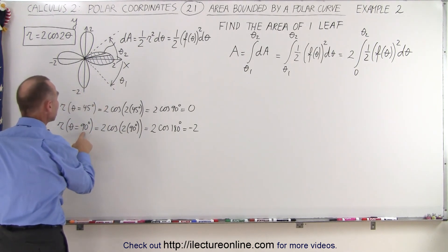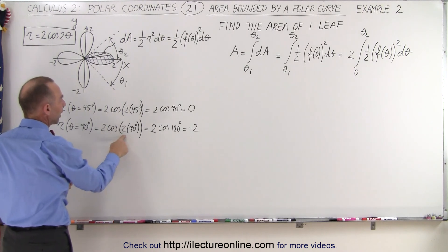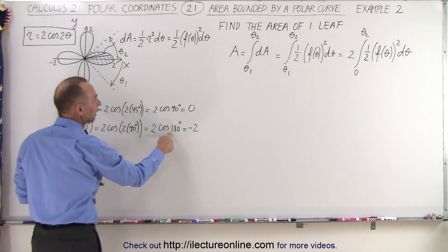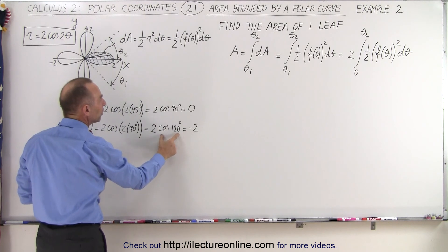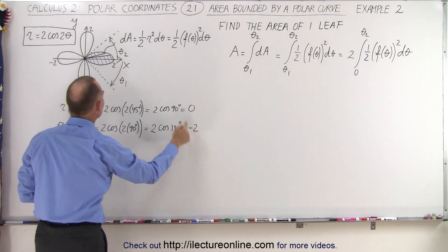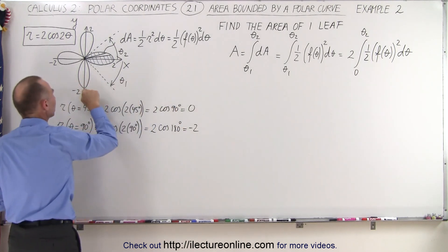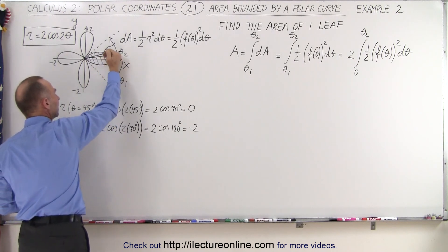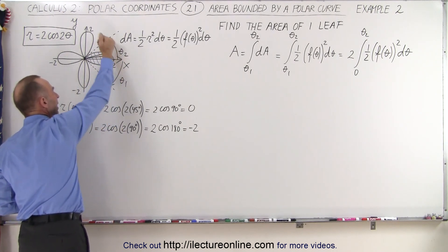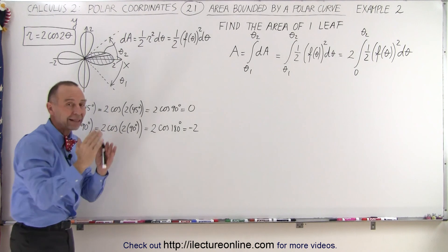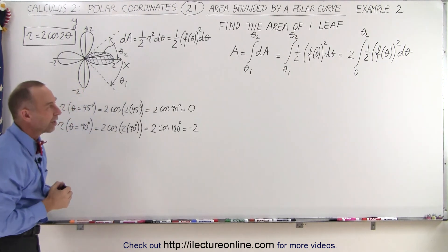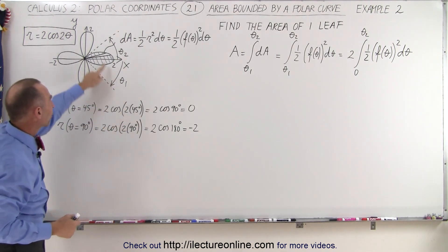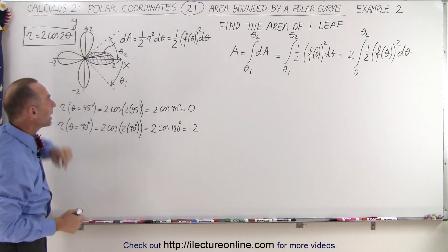When we plug in 90 degrees, 2 times the cosine of twice 90 is 2 times the cosine of 180. The cosine of 180 is negative 1, which times 2 gives us negative 2. That puts us right over here. So you can see that the 45 degree angle indeed is limiting the shape of that leaf on the upper side. So we have our angle correct at 45 degrees as the limiting angle.